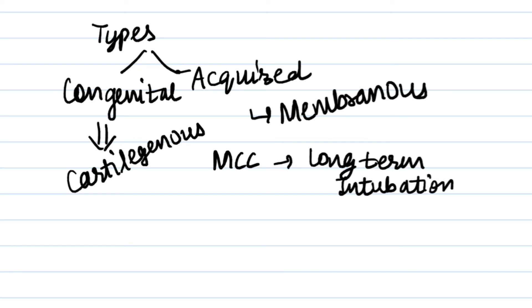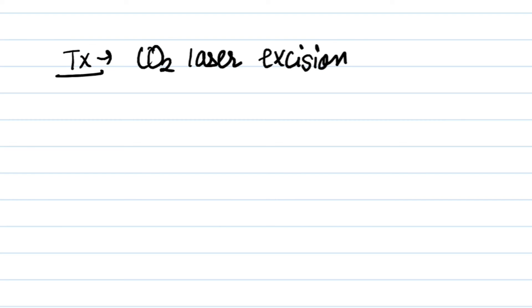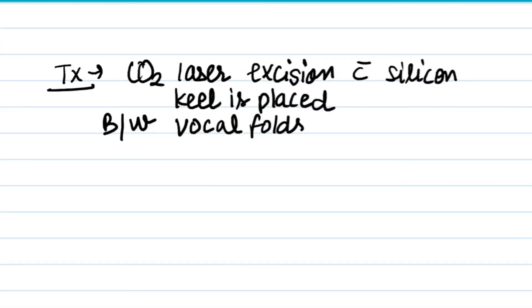How can we treat it? Treatment is carbon dioxide laser excision with silicon keel placed in between the vocal folds for a few weeks to two months to prevent regrowth.